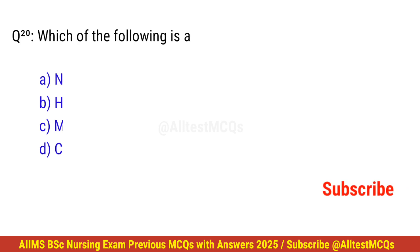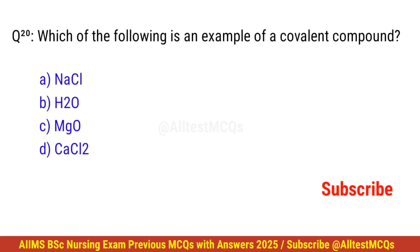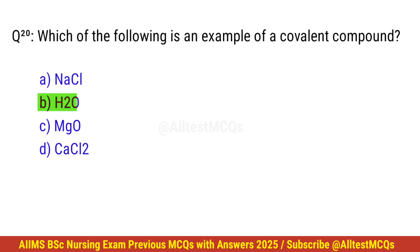Question number 20. Which of the following is an example of a covalent compound? Right option is B. H2O.